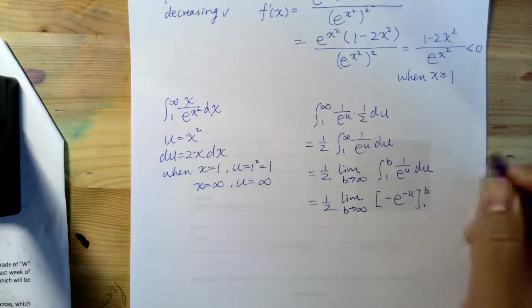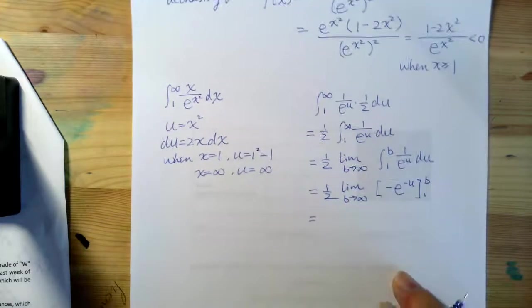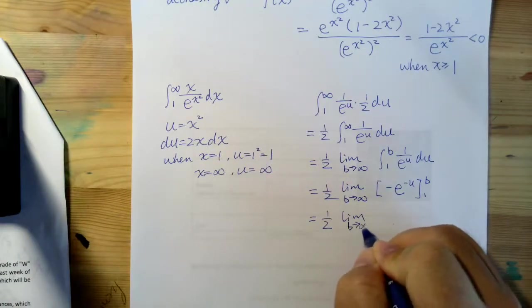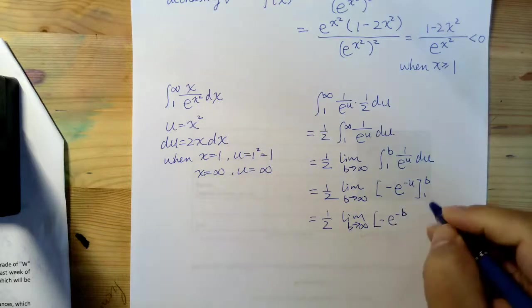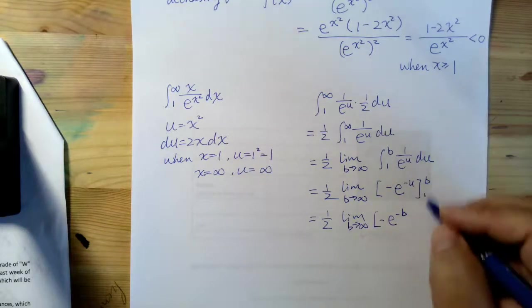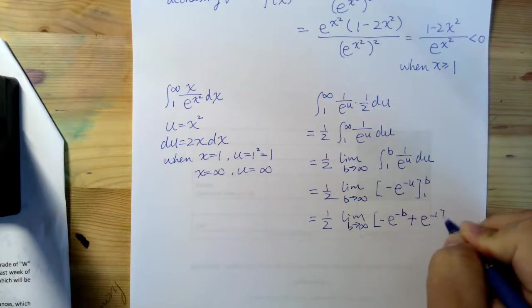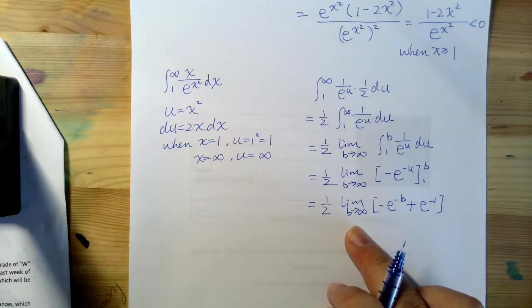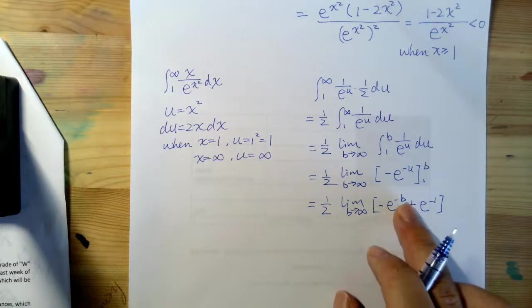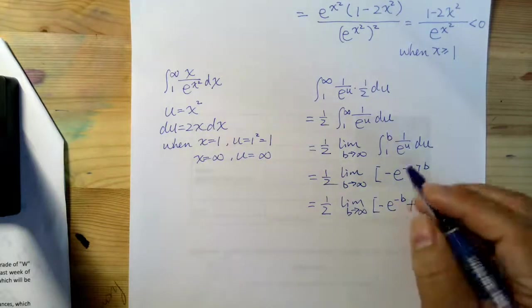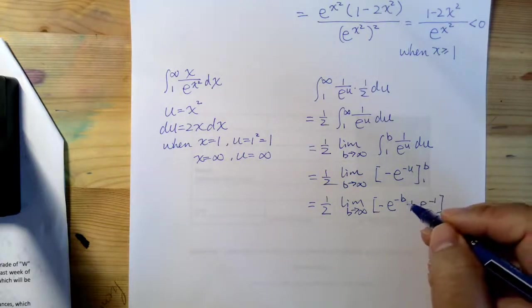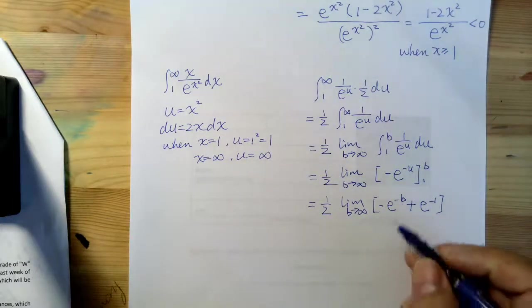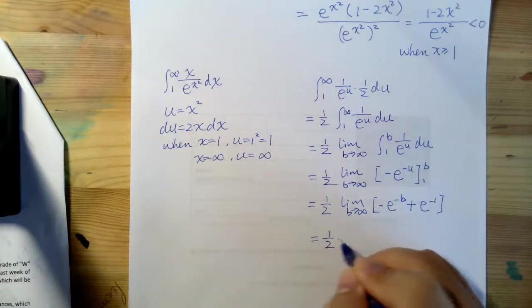negative e to the power of negative u from 1 to b. So I plug b and 1 into this. It's negative e to the power of negative b minus, minus becomes a plus, e to the power of minus 1. And now as b goes to infinity, negative e to the power of negative b, this part now goes to 0. Think about e to the power of negative infinity, it will be 0. So it turns out this is half e to the power of negative 1.